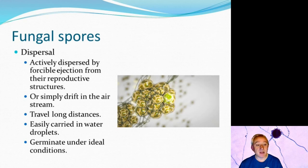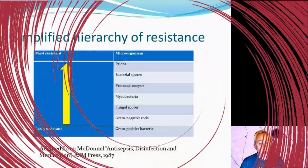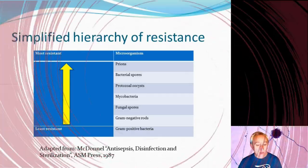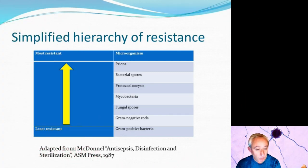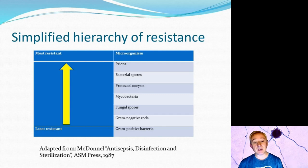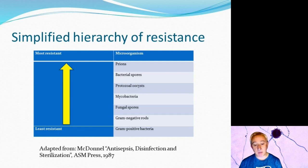An important factor now is disinfection and cleanroom controls. We need this understanding so we can use appropriate disinfectants at appropriate frequencies. As you can see from McDonald's classic hierarchy of resistance, spores are more resistant to disinfectants than most other microorganisms. On the list, gram-positive vegetative bacteria tend to be the least resistant; gram-negative bacteria, because they possess an additional outer membrane acting as an uptake barrier in the form of lipopolysaccharide, are above them.